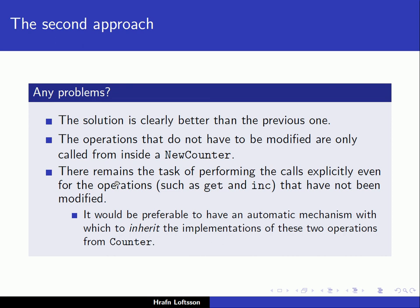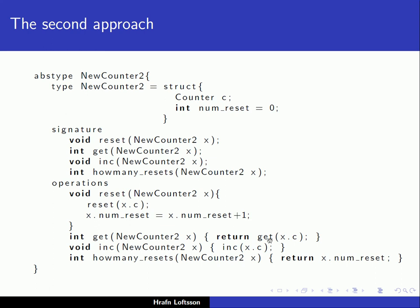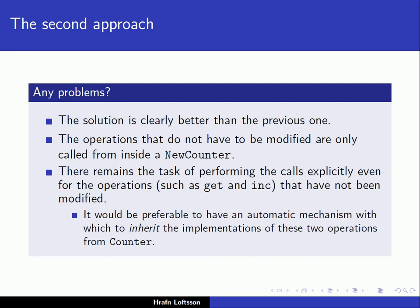There is still one problem: we have to explicitly call the functions inside counter even though we are not modifying anything. Why? Because there is no inheritance here — we are not in an object-oriented language. We are in a language that supports abstract data types but there is no inheritance, so we can't really inherit the code. We have to explicitly call the underlying functions in the counter type. It would be preferable to have an automatic mechanism with which to inherit the implementations of get and inc from counter.